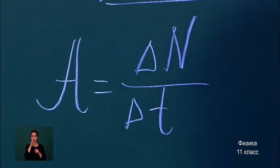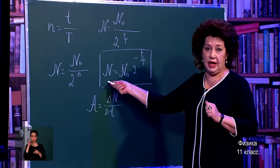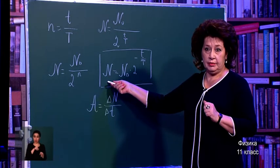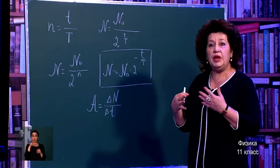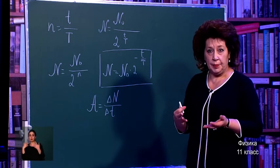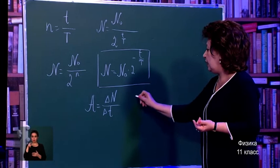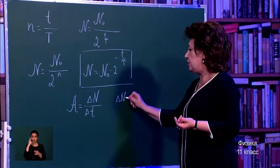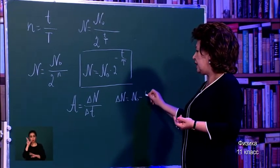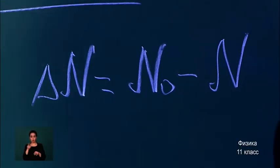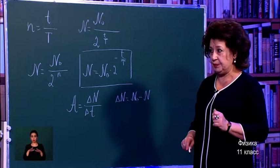Pay attention so you don't get confused: N is the number of remaining nuclei; N₀ is the number of nuclei at the start of decay. To find ΔN — the change — you subtract the remaining number of nuclei from the initial number: ΔN = N₀ − N. This will also be useful when solving problems.